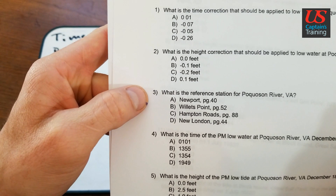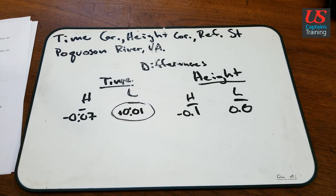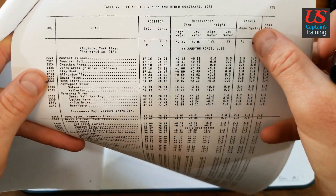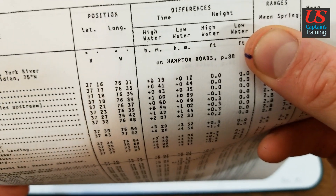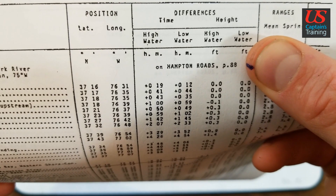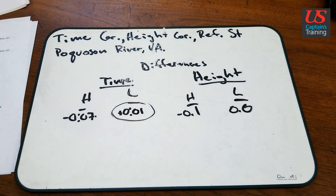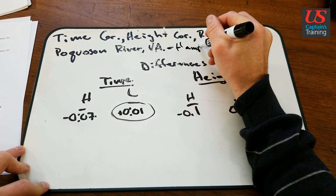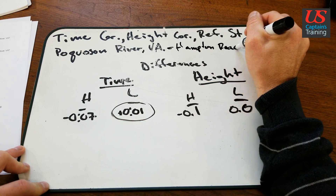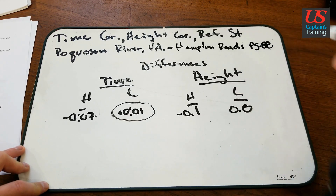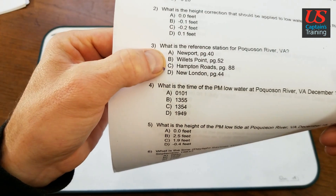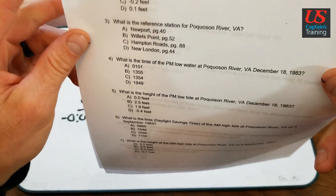Problem 3 asks, what is the reference station for Pocosin River? We go back to table 2, to the index, and find the reference station listed right there: Hampton Roads, page 88. That is the reference station. Let's record that — Hampton Roads, page 88. Looking at the answers, it's C: Hampton Roads, page 88.